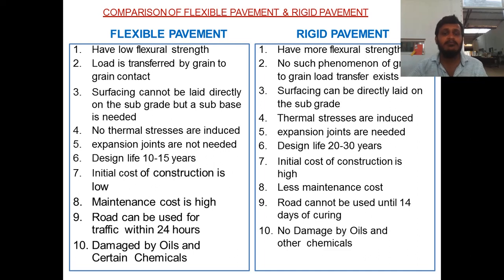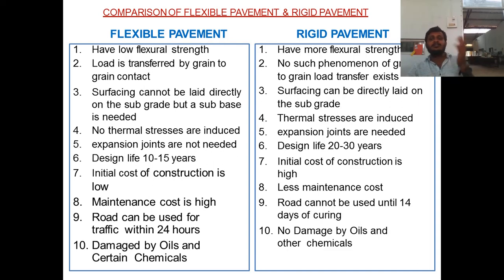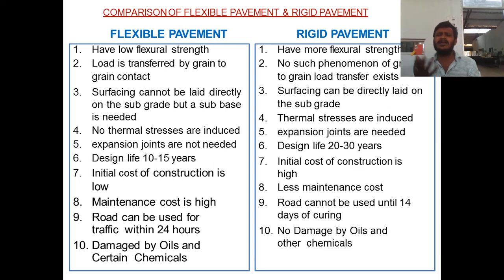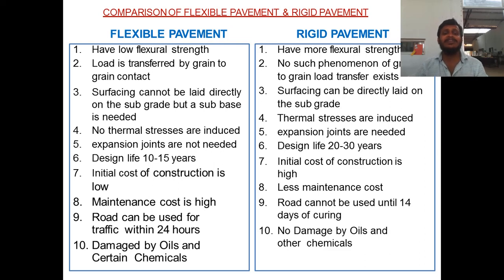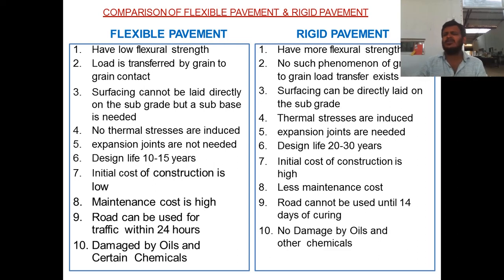In flexible pavement, the surface course cannot be laid directly over the subgrade; a base course or sub-base course is needed. In rigid pavement, the surface course can be laid directly on the subgrade or with the help of a base course. No thermal stresses are induced in flexible pavement, but thermal stresses are induced in rigid pavement. Expansion joints are not needed in flexible pavement, but rigid pavement requires expansion joints, contraction joints, longitudinal joints, and transverse joints.